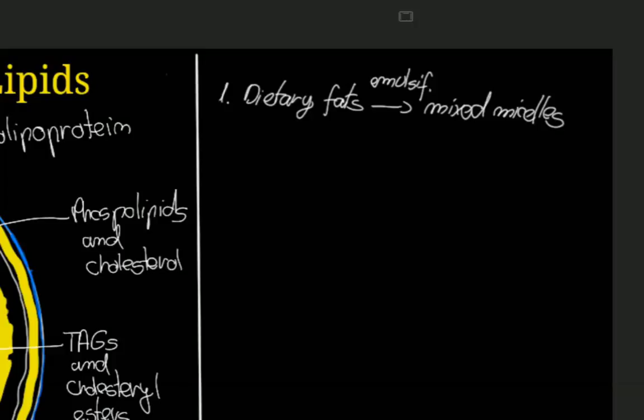When mixed micelles are formed, this enables the activity of lipases in the small intestine which convert triglycerides into monoglycerides and diglycerides. So this is step number two, which is the degradation of triglycerides by the intestinal lipases.